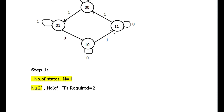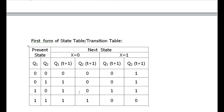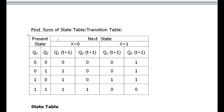Since n equals 4, we can find the number of flip-flops required. The number of bits used are 2, hence the number of flip-flops required are 2. In either way we can calculate the number of flip-flops required. Then we have to form the first form of state table, also called the transition table.